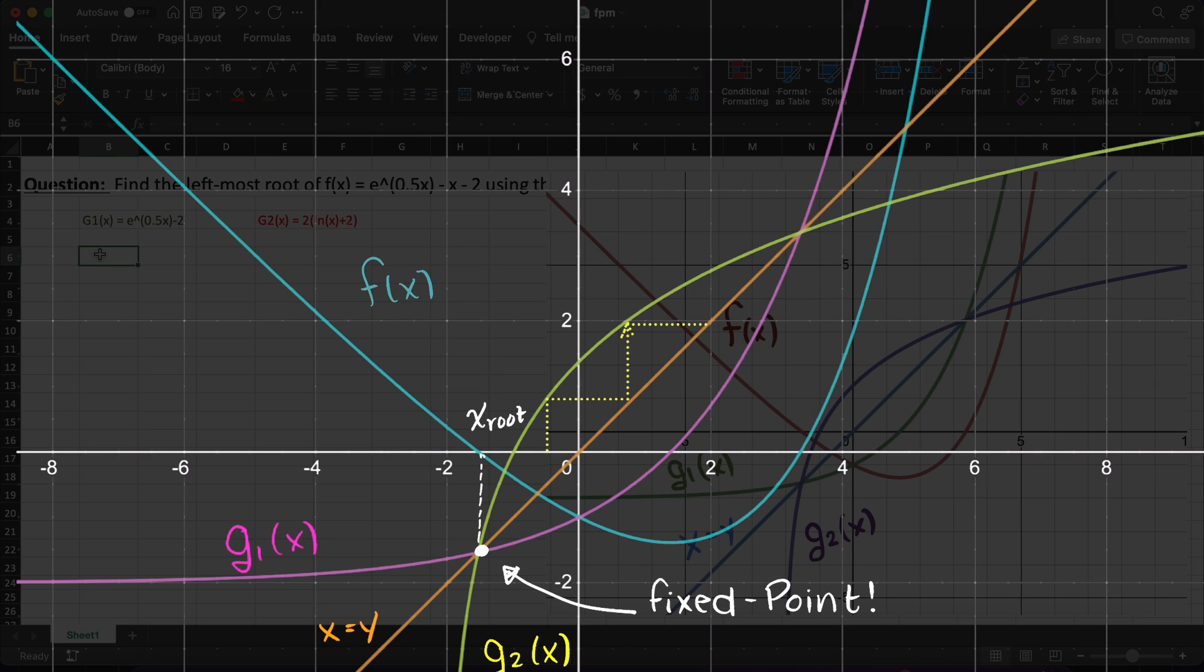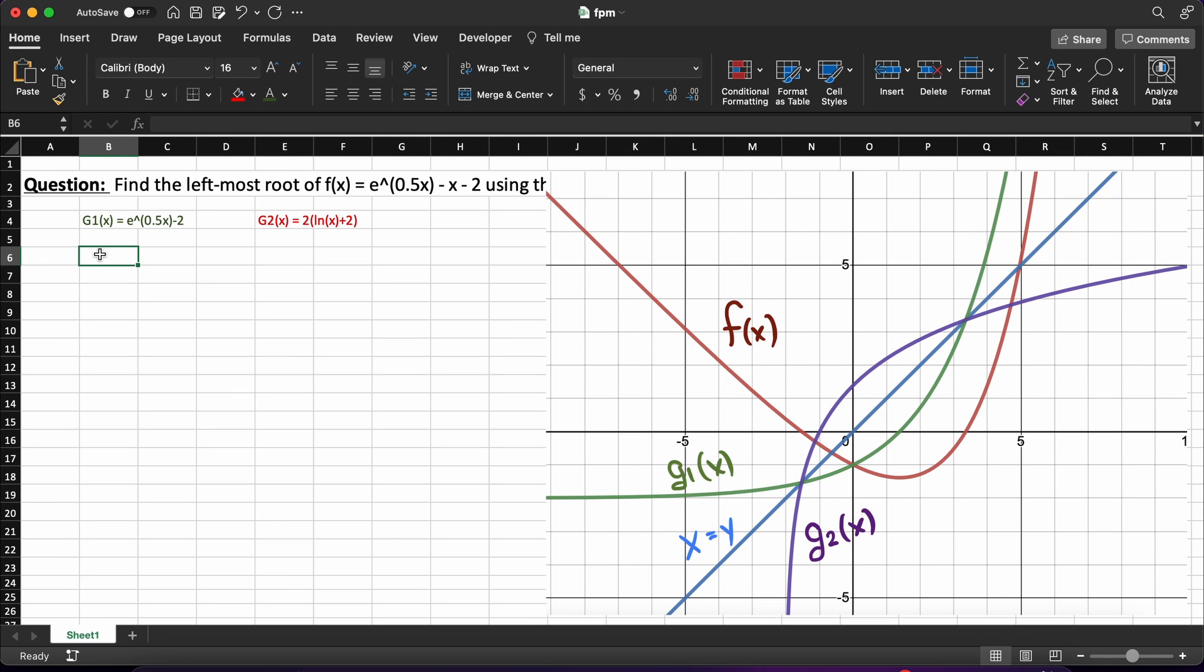We can validate this by trying a few starting guesses, we will always diverge away as you can see here. Therefore, we will advance with g1 of x. Now that we have our prep work completed, let's implement fixed point iteration into Microsoft Excel.